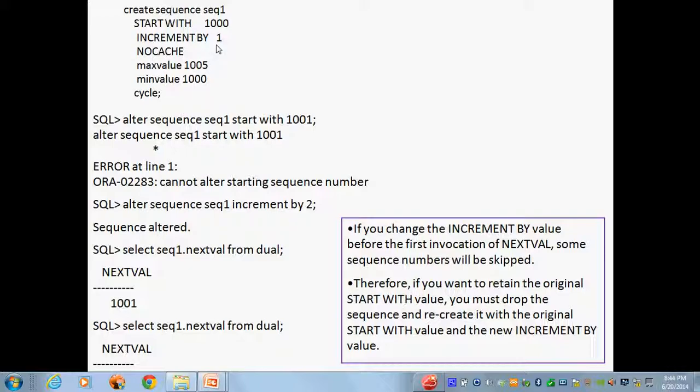You can see, by default, once you create the sequence, if you give next value, it will start with the start number. But here it starts with what? 1001, not 1000. That's what I say. It skips the value actually.